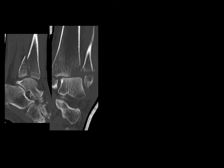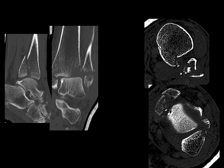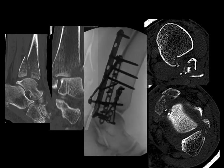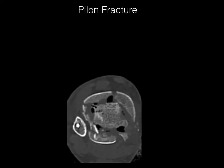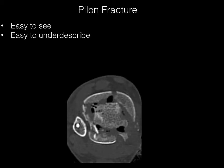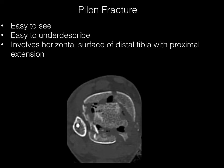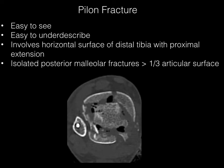Here are some other malleolar fractures. The reason we want to describe all of them is because they may all be fixed. One special type of fracture of the ankle is the pylon fracture. These are easy to see but also easy to underestimate. They involve the horizontal surface of the distal tibia with proximal extension, and if there's a fracture isolated to the posterior malleolus covering more than about a third of the articular surface, that's still considered a pylon fracture.